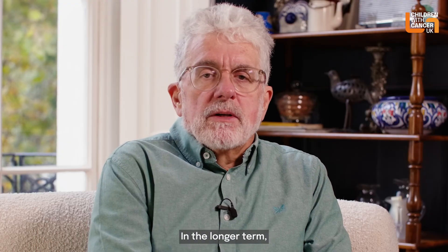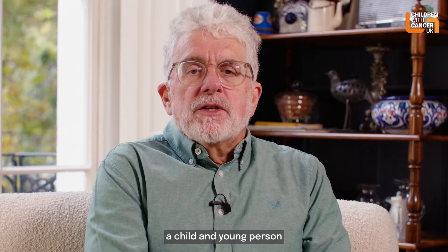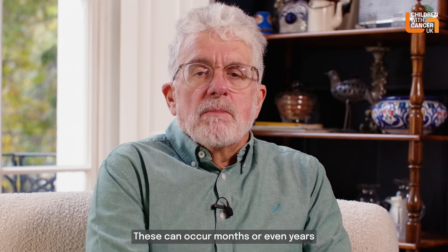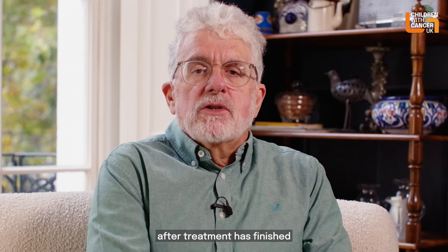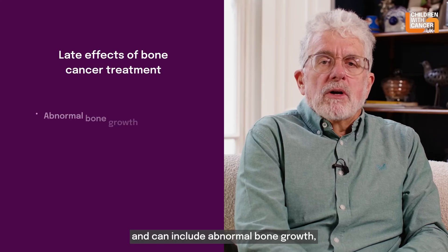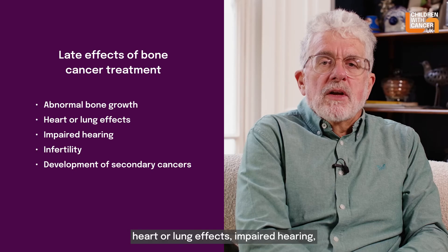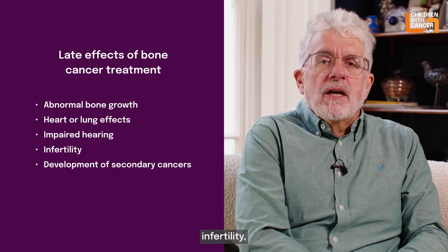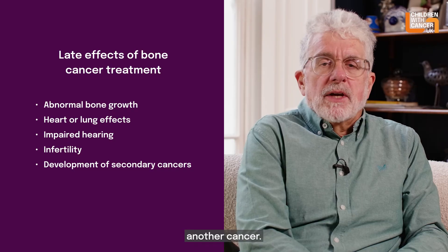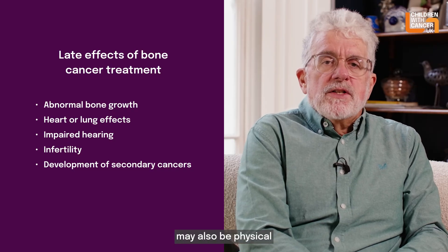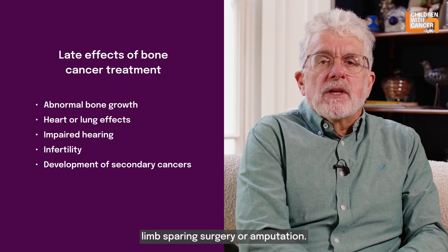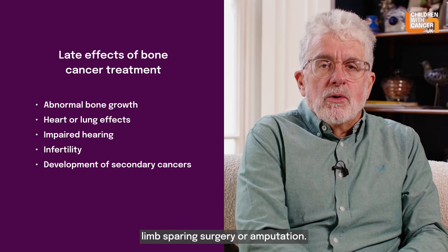In the longer term, a child or young person may be at risk of a variety of late effects of treatment. These can occur months or even years after treatment has finished and can include abnormal bone growth, heart or lung effects, impaired hearing, infertility, and increased risk of developing another cancer. There may also be physical and psychological problems associated with having either limb-sparing surgery or amputation.